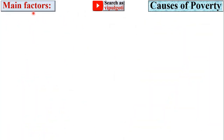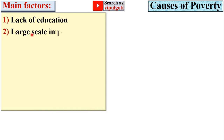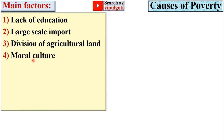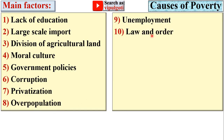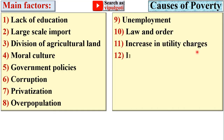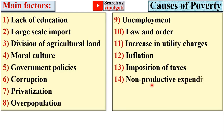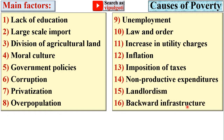First, let's see the main factors that create poverty, or the causes of poverty: lack of education, large scale import, division of agriculture land, moral culture, government policies, corruption, privatization, overpopulation, unemployment, law and order, increase in utility charges, inflation, imposition of taxes, non-productive expenditures, landlordism, and backward infrastructure.